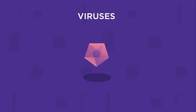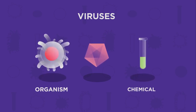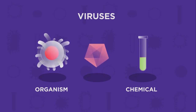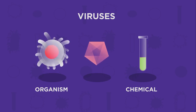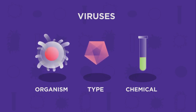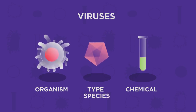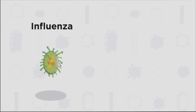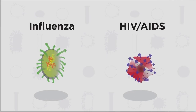As we just saw, viruses aren't made up of cells. In fact, they aren't really living. They are halfway between a living organism and a chemical. Because they aren't living, we say there are different types of virus rather than saying different species of virus. Some common types of viruses are influenza and HIV or AIDS.